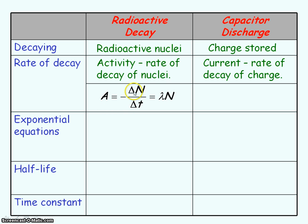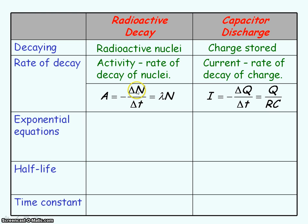Activity is equal to the number of radioactive decays per unit time. Current is equal to the rate of decay of charge. I can see there are minus signs in both cases, and that's because as time increases the number of radioactive decays and hence activity decreases, and for a capacitor discharging, as time increases the charge stored on the capacitor as well as the current in the circuit decreases.